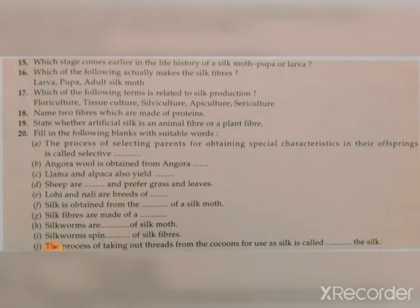Question fifteen: Which stage comes earlier in the life history of a silk moth — pupa or larva? The answer is larva. Question sixteen: Which of the following actually makes the silk fibers? The answer is larva. Question seventeen: Which of the following terms is related to silk production? The answer is sericulture. Floriculture is for flowers, tissue culture is for tissues, apiculture is for honey bees.